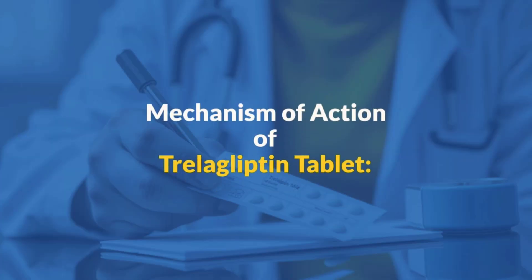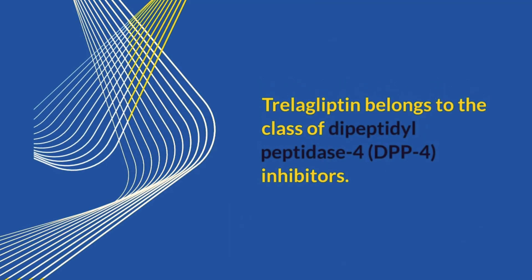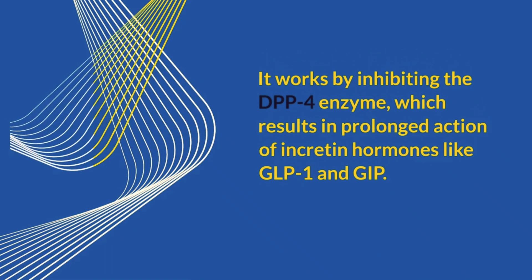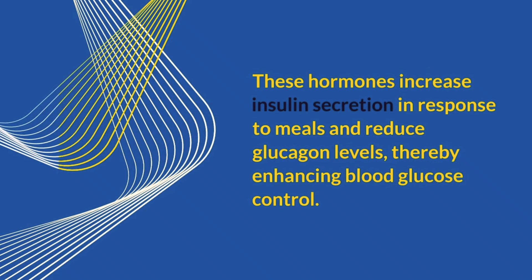Moving on to the mechanism of action of Treloglyptin tablet. Treloglyptin belongs to the class of dipeptidyl peptidase-4 (DPP-4) inhibitors. It works by inhibiting the DPP-4 enzyme, which results in prolonged action of incretin hormones like GLP-1 and GIP. These hormones increase insulin secretion in response to meals and reduce glucagon levels, thereby enhancing blood glucose control.